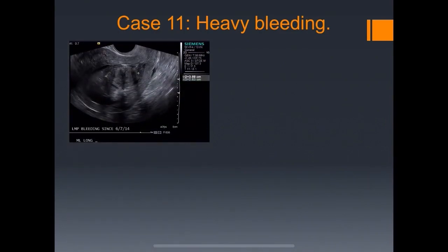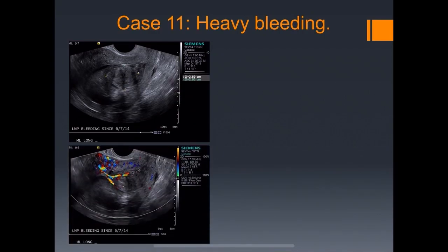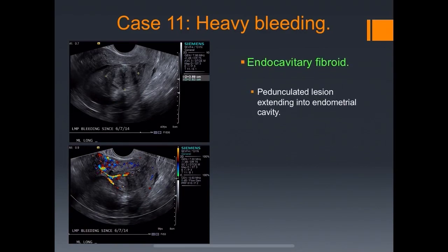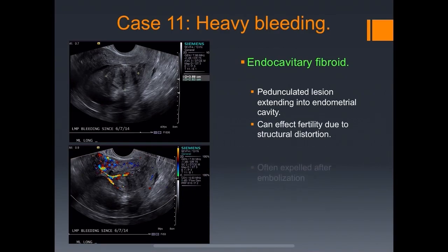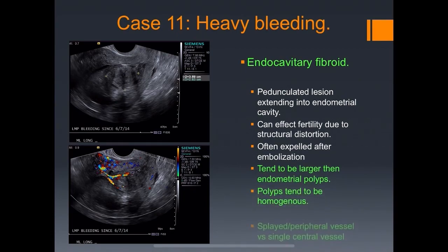Case eleven: heavy bleeding. A structure in the middle of the uterus looks typical of a fibroid, and we see splayed vessels. This turns out to be an intercavitary fibroid — a pedunculated lesion extending into the endometrial cavity. It can affect fertility due to structural distortion and is often expelled after embolization. Fibroids tend to be larger than endometrial polyps, which are more homogeneous and echogenic, and polyps tend to have a single central vessel rather than splayed vessels.